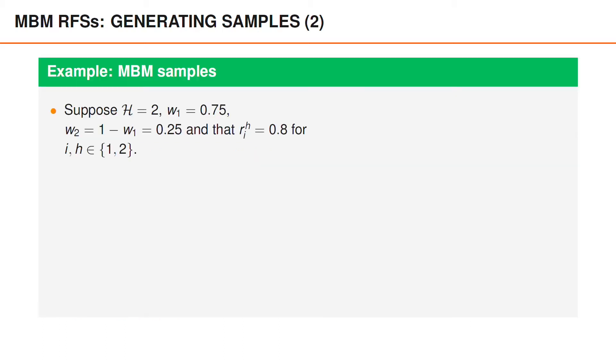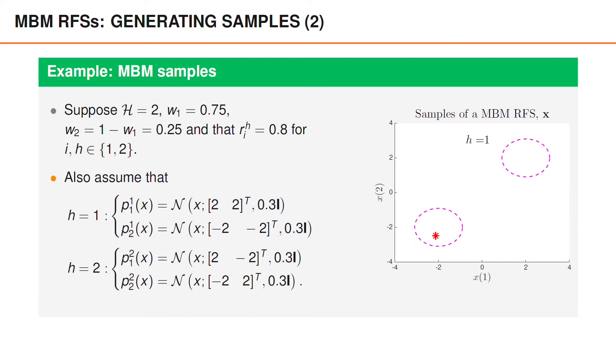Let us look at samples from a simple multi-Bernoulli mixture. Suppose capital H is 2, such that there are only two hypotheses, and let the probability of the first hypothesis be 0.75, and the probability of the second hypothesis be 0.25. We also assume that both Bernoulli components in both hypotheses have an existence probability 0.8. As for the spatial PDFs, all Bernoullis are Gaussian with the same covariance matrix, 0.3 times the identity matrix. To simplify the visualization, we also assume that there are vectors of length 2. Under hypothesis 1, the first Bernoulli has mean [2,2], and the second has mean [-2, -2]. These Gaussian densities are illustrated in the figure.